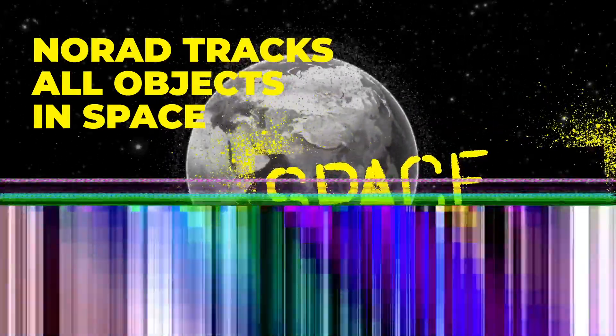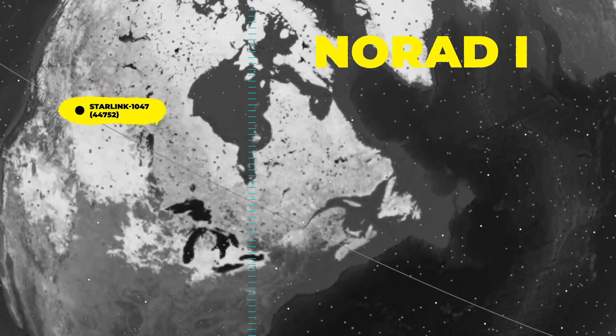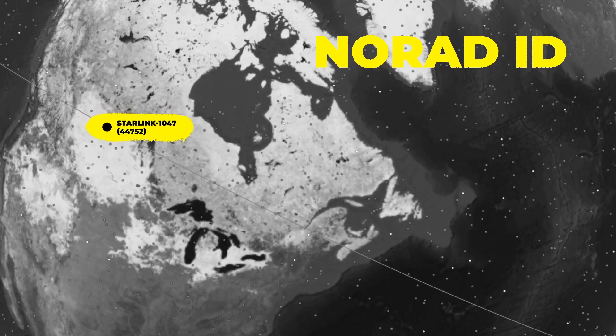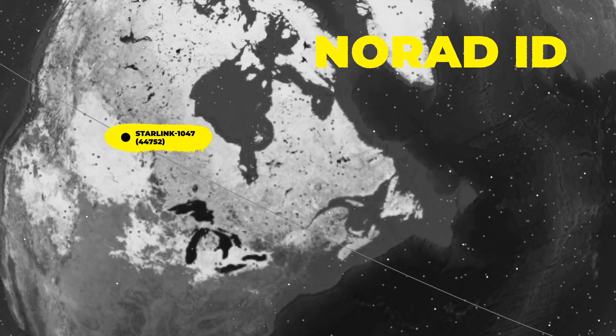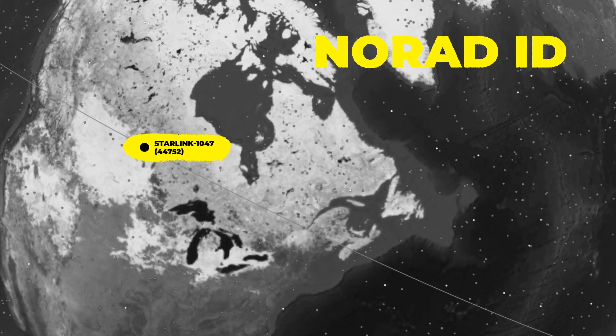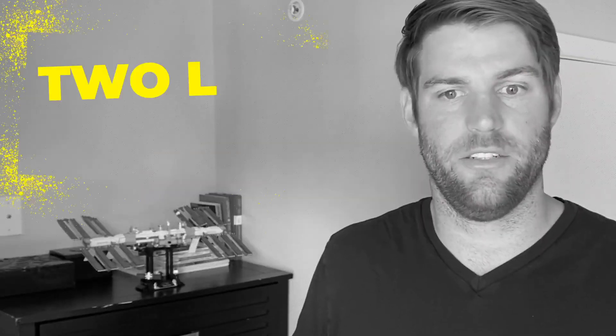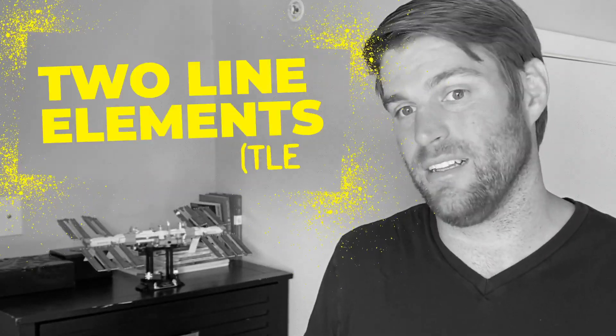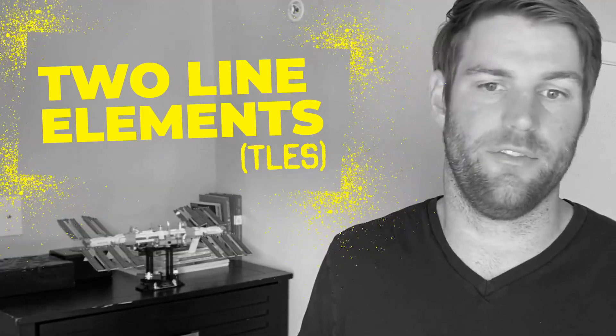Each object in space gets a unique ID assigned to it called a NORAD ID, which is universally used by satellite operators to reference it. NORAD uses these observations to derive the orbital parameters and uses two-line elements, or TLEs, as a standard for providing all the orbital information.